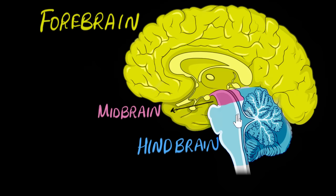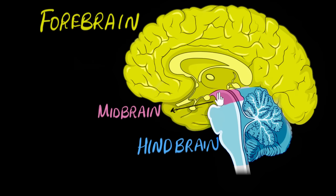Usually when we say humans have a big brain, we're basically talking about this forebrain section. The midbrain is actually the beginning part of the brain stem. The brain stem is on top of which the forebrain sits. The brain stem connects the forebrain to the spinal cord — this continues as the spinal cord. So the beginning section of that brain stem is what we call the midbrain, and then the later section of the brain stem is a part of the hindbrain.